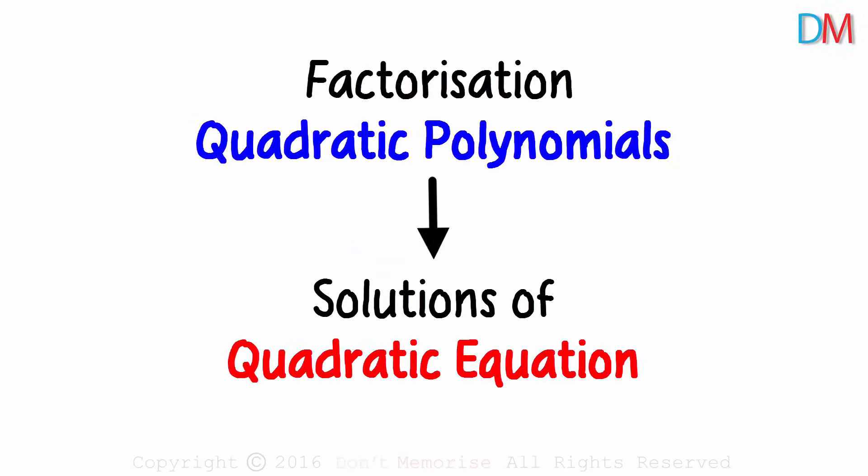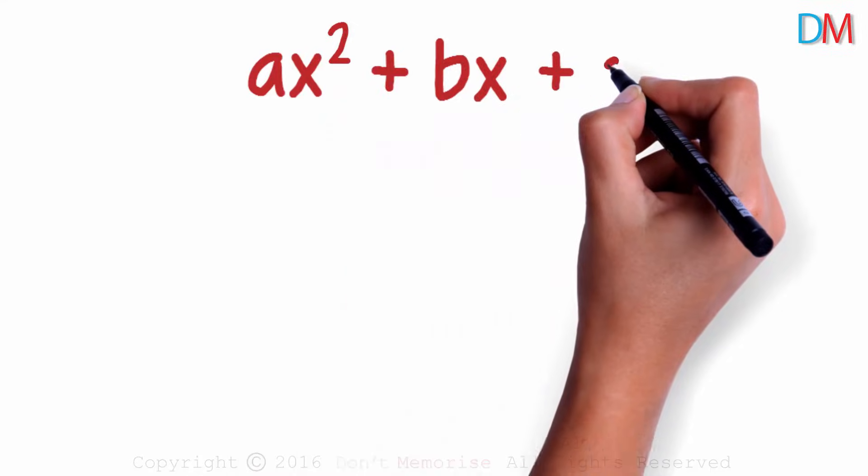Before we move on to finding the solution of a quadratic equation, let's quickly review how quadratic polynomials were factorized. The general form of a quadratic polynomial is ax squared plus bx plus c.